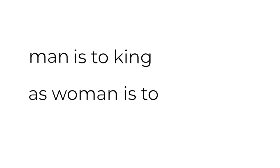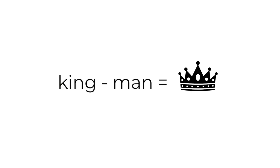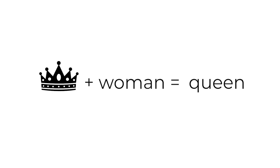Then we can do math on them — like, man is to king as woman is to... hopefully we get queen. We can do king minus man and get some value that's like 'royalty,' and then do royalty plus woman and come up with queen. That's how these word vectors work. They make associations and we can do math on them to find what words are related.